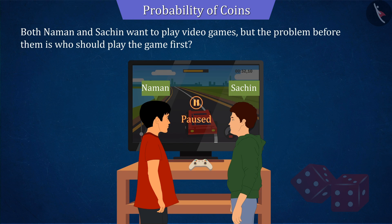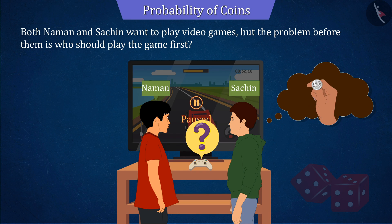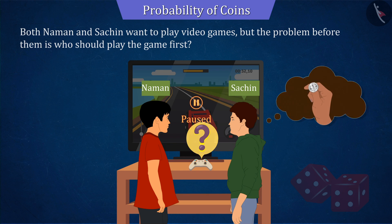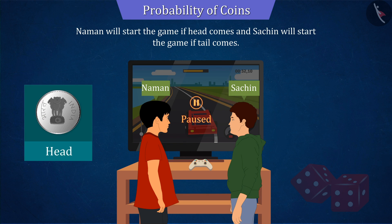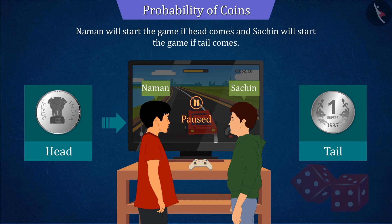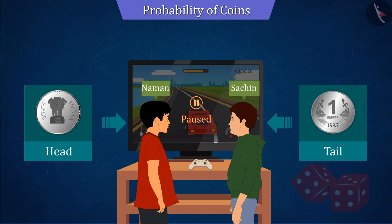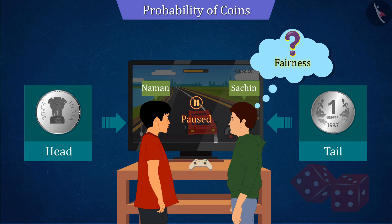Both Naman and Sachin want to play video games, but the problem before them is who should play the game first. They decide to make this decision by tossing a coin, and decided that Naman will start the game if the outcome is head and Sachin will start the game if the outcome is tail. But Sachin wants to know if doing so is a fair decision.